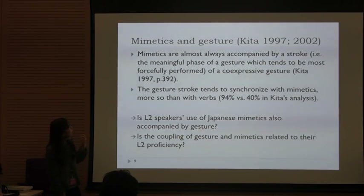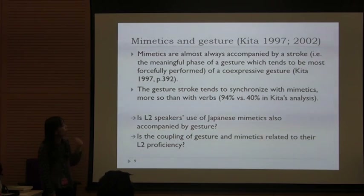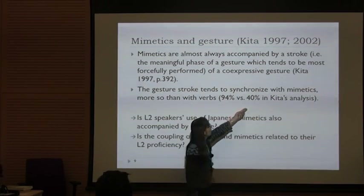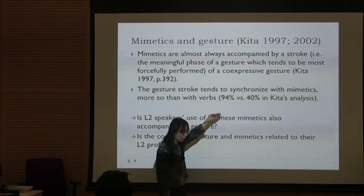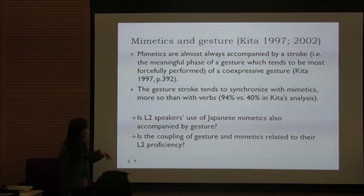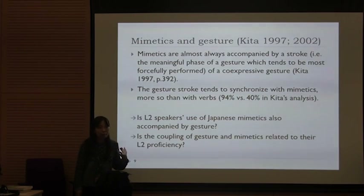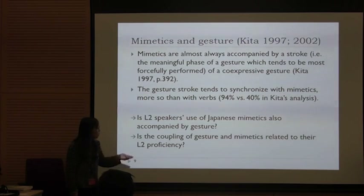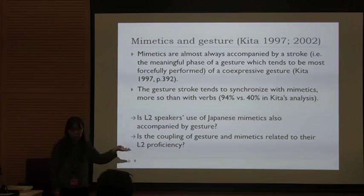In Kita's study, although he didn't have many participants, he found that almost all mimetics were accompanied by a stroke — that is, a meaningful phase of gesture. Compared to verbs, mimetics were 94% of the time accompanied by iconic gesture. The questions that arise, for example, are whether L2 speakers — those people who use Japanese as a second language — also use gesture when they use mimetics, and whether it depends on Japanese language proficiency.